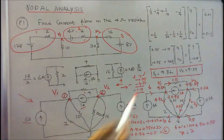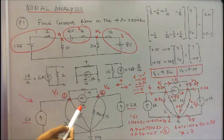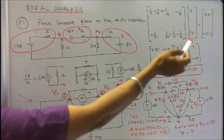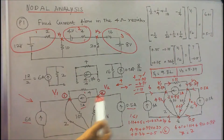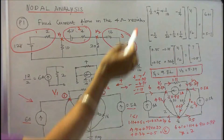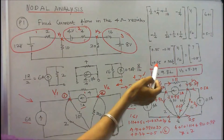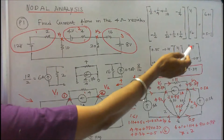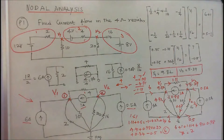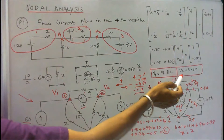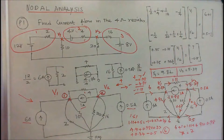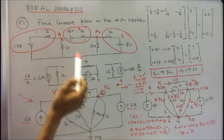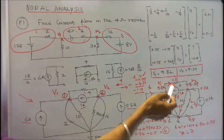The matrix becomes: [0.85, -0.25; -0.25, 0.363] × [V1; V2] = [7; -0.5]. Current towards node 1 is 6 plus 1 equals 7. Current towards node 2 is 0.5, and current leaving node 2 is 1, giving minus 0.5. Solving: V1 = 9.82 volts, V2 = 5.39 volts. Therefore, current in the 4 ohm resistor = (9.82 - 5.39) / 4 = 1.11 amps.